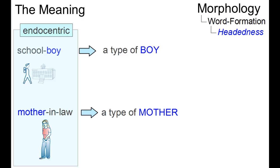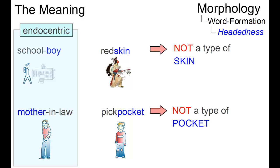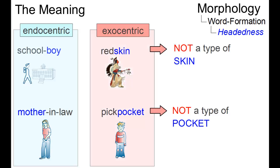If the head fails to define the meaning of its compound — such as in pickpocket and redskin, where neither is pickpocket a type of pocket nor is redskin a type of skin — we have an exocentric compound.